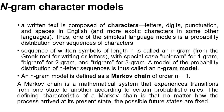We start with n-gram character models. A written text is composed of characters — letters, digits, punctuation and spaces in English. One of the simplest language models is a probability distribution over sequences of characters. A sequence of written symbols of length n is called an n-gram, with special cases: unigram for 1-gram, bigram for 2-gram, and trigram for 3-gram. A model of the probability distribution of n-length sequences is thus called an n-gram model, defined as a Markov chain of order n-1.